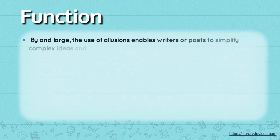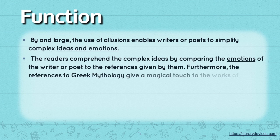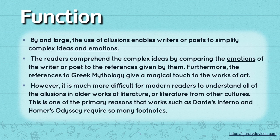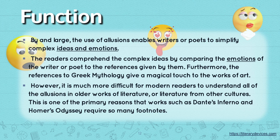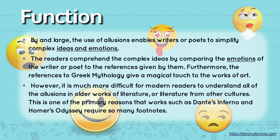By and large, the use of allusions enables writers and poets to simplify complex ideas and emotions. Readers comprehend complex ideas by comparing the emotions of the writer or poet to the references given by them. Furthermore, references to Greek mythology give a magical touch to works of art. However, it is much more difficult for modern readers to understand all the allusions in older works of literature or literature from other cultures — this is one of the primary reasons that works such as Dante's Inferno and Homer's Odyssey require so many footnotes.